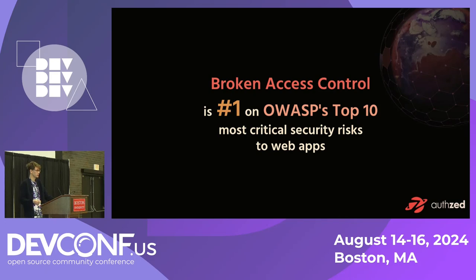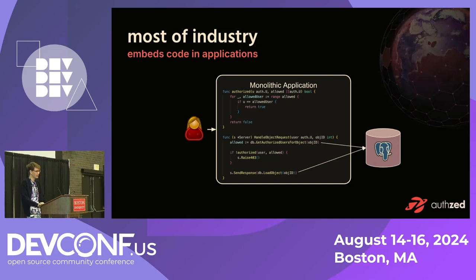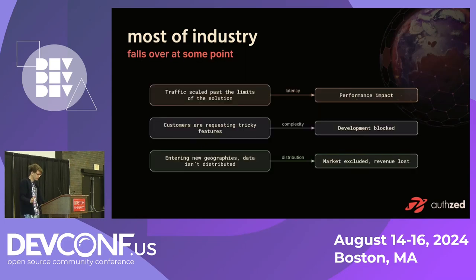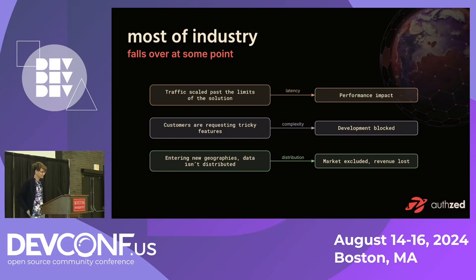So why is this the case? Most of industry, when building a basic web application, writes some code that queries a relational database and interprets the results. At some point, this strategy falls over — whether you didn't design the foundation to support something more complex, impacting latency, or you find you have to join on ten tables to get your authorization data.